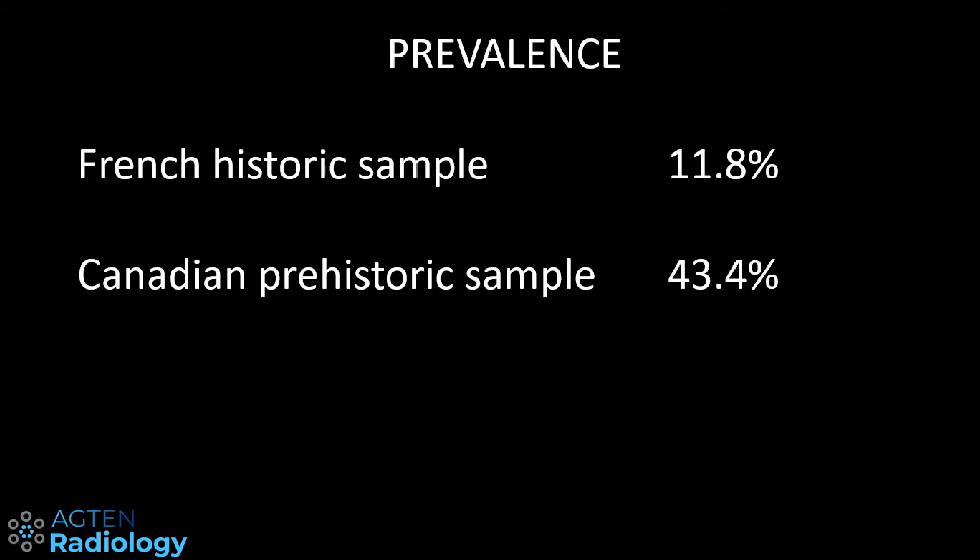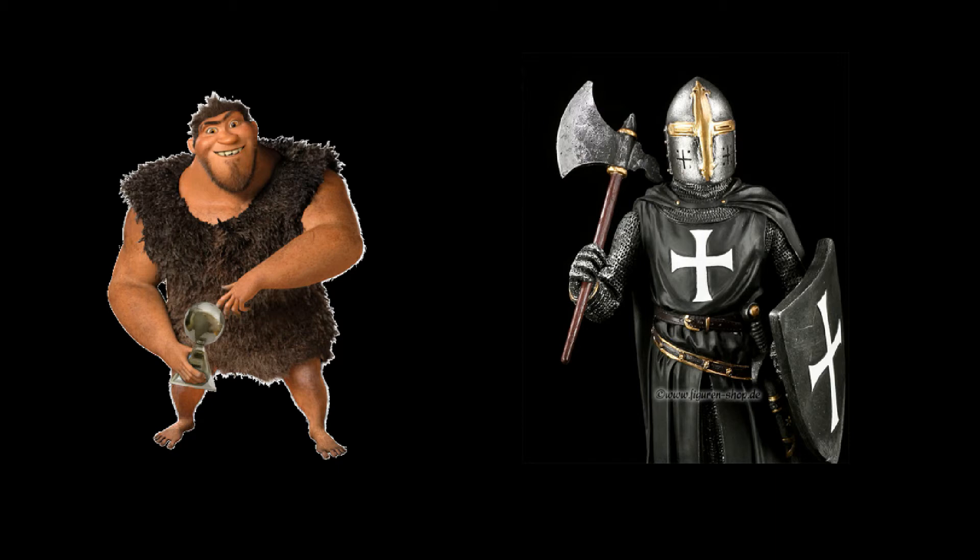They looked at over 400 hip bones and assessed the presence of the superior acetabular roof notch. The bones were dated from the 11th to 13th century and a second sample from the 16th to 17th century. The prevalence in this French historic sample was 11.8%, much lower than the reported prevalence of up to 43.4% in a prehistoric native Canadian sample. The authors assumed that environmental factors and living conditions were a possible explanation — like greater mechanical stress in childhood combined with less favorable nutritional conditions in the prehistoric era for the Canadians compared to the French.